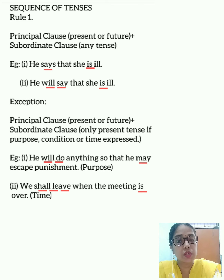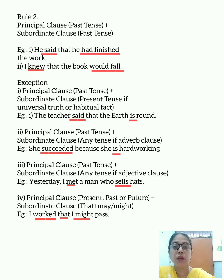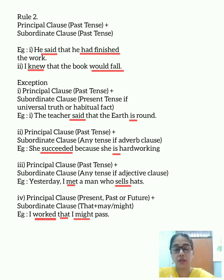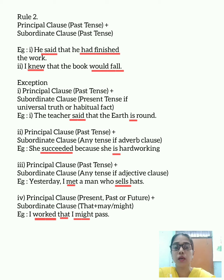Now the second rule is that if the verb in the principal clause is in the past tense, then the verb in the subordinate clause will also be in the past tense. For example, 'He said that he had finished the work.' Here 'he said' is the principal clause in the past tense, and 'that he had finished the work' is the subordinate clause, also in the past tense.